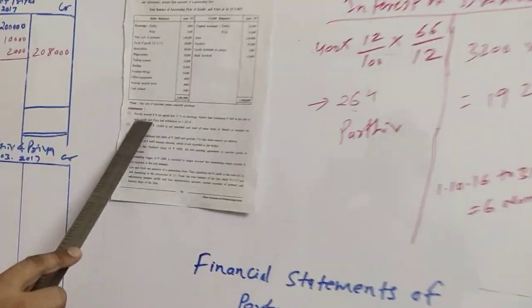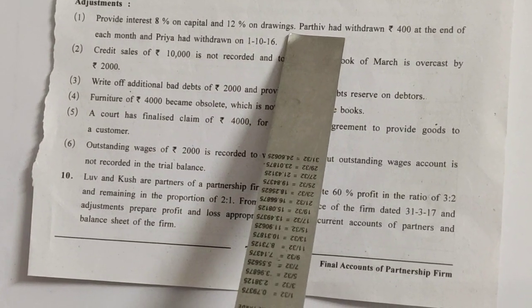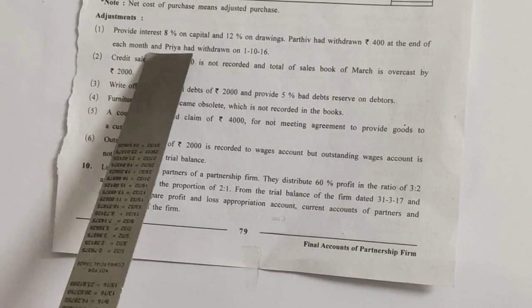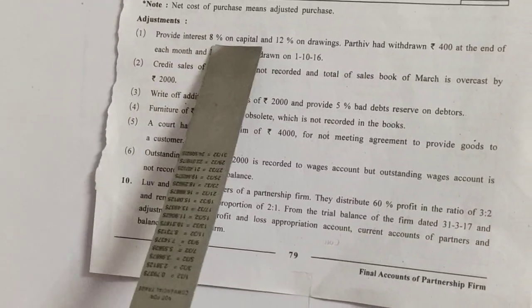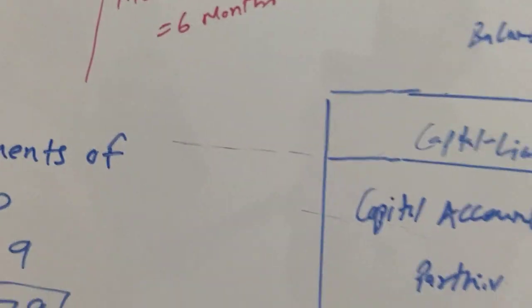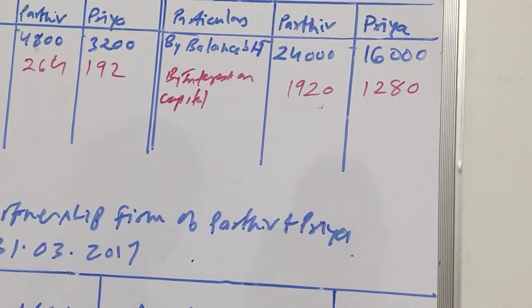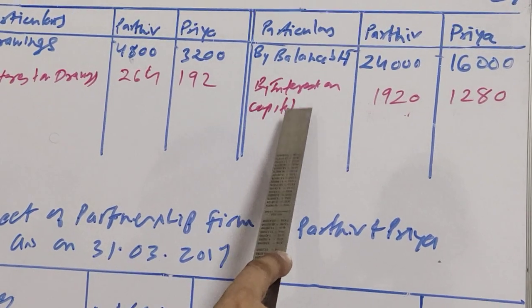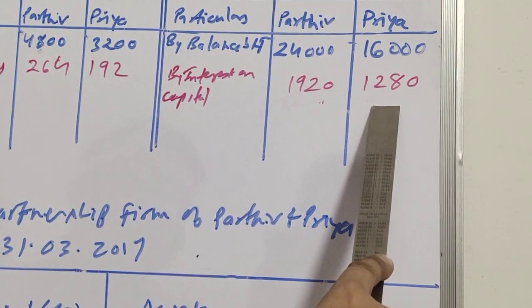The first adjustment says: provide 8% interest on capital and 12% interest on drawings. Parthiv had withdrawn Rs.400 at the end of each month, and Priya had withdrawn the entire amount on 1-10-2016. First, we will focus on interest on capital, which is to be provided at 8%. The capitals of Parthiv and Priya are 24,000 and 16,000 respectively. We calculate: 24,000 at 8% gives 1,920; and 16,000 at 8% gives 1,280.